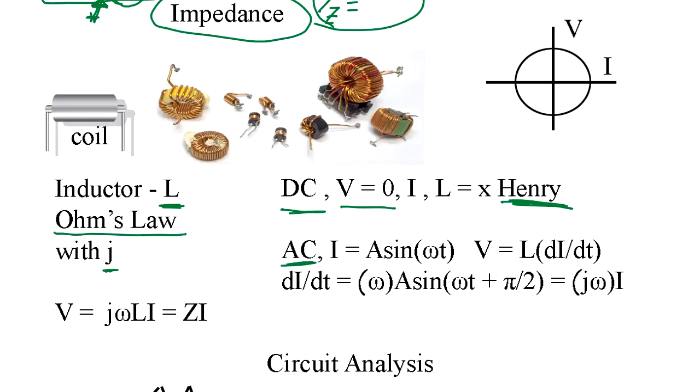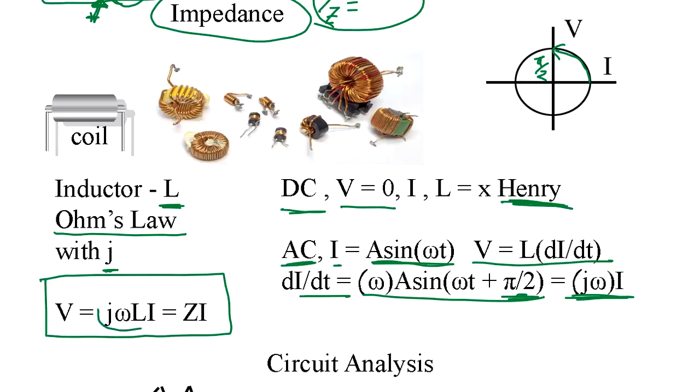In the AC, when current is sine wave, the voltage of inductor will be V equal L dI/dt. So we have to take a derivative of I. So it's going to be the same way. The phase shift, j omega I. So V equals j omega L I. And this is impedance again. So again, we can use Ohm's law.